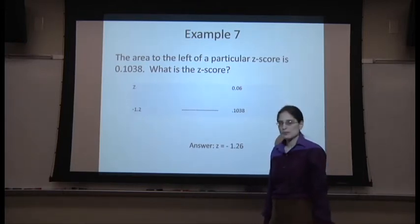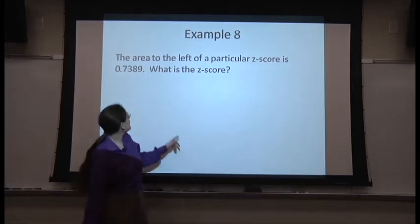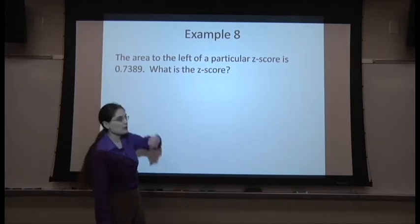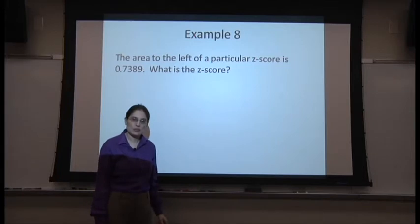Let's do another example. The area to the left of a z-score is 0.7389. Find the z-score, try it.